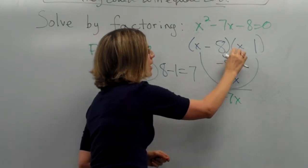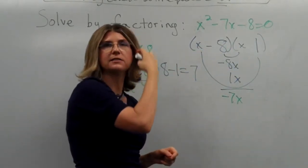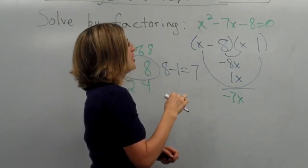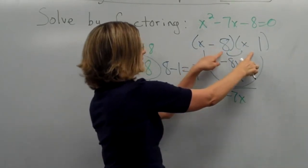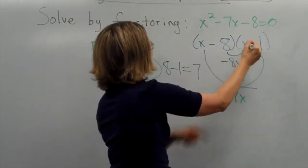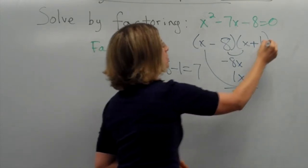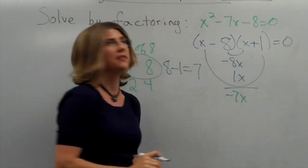That could make it seem much more difficult than it is. Remember, these two signs have to be different, because negative eight times positive one gives us negative eight. So, that gives us a plus one. And then, of course, you remember to put in the eight.